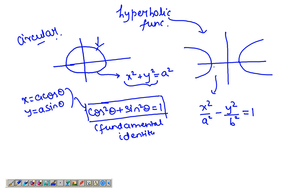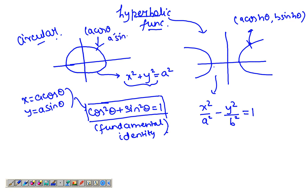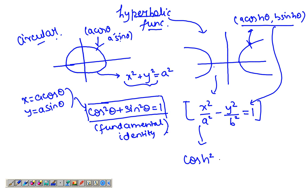Similarly, the hyperbolic trigonometric functions are functions which satisfy the equation of the hyperbola and form what is known as the parametric coordinates of the hyperbola. We substitute these values in, and we get the fundamental identity for the hyperbolic functions: cosh²θ - sinh²θ = 1. Here you have a negative — that's the only difference.